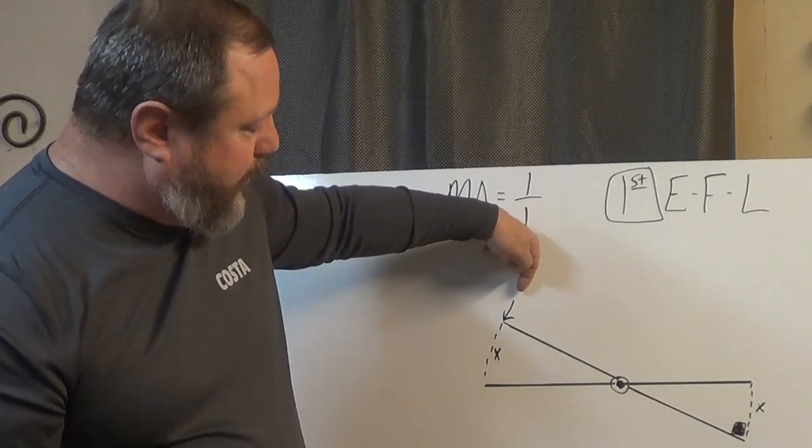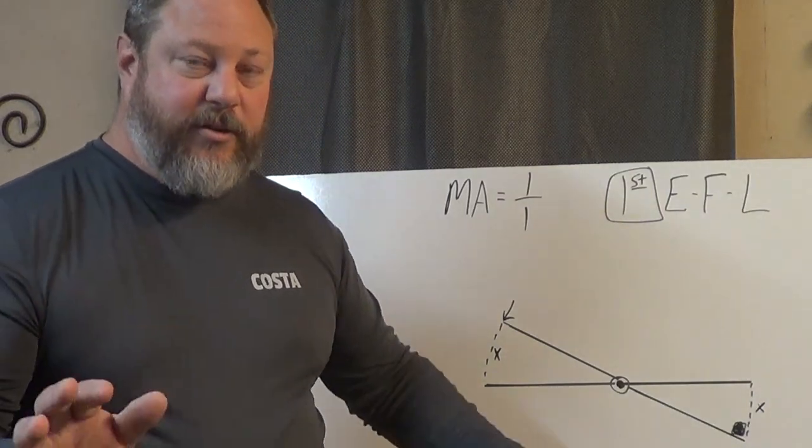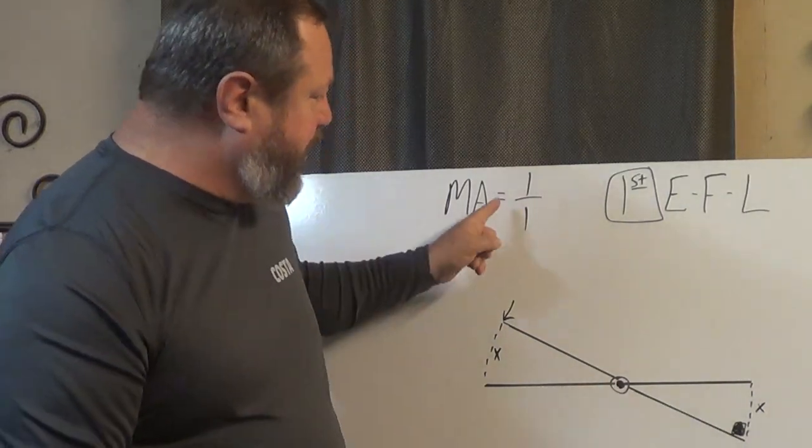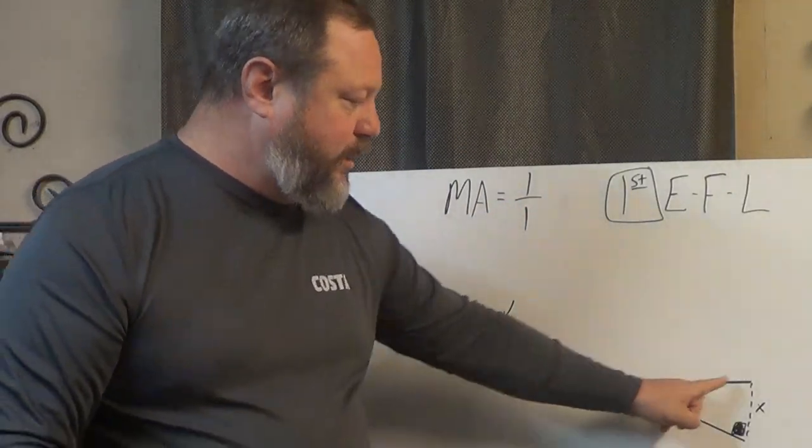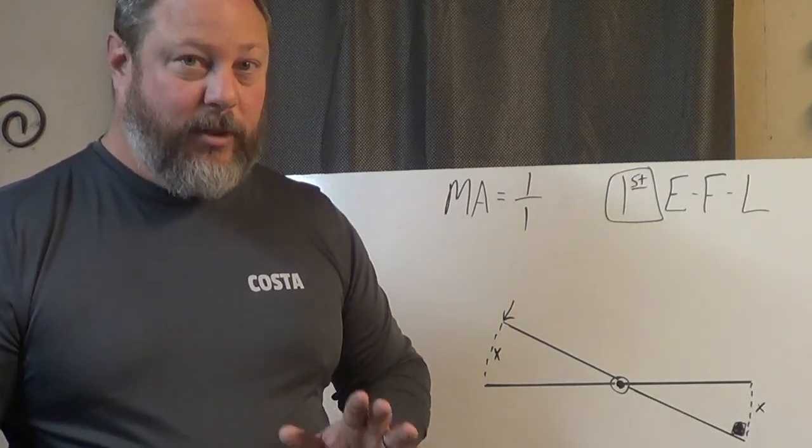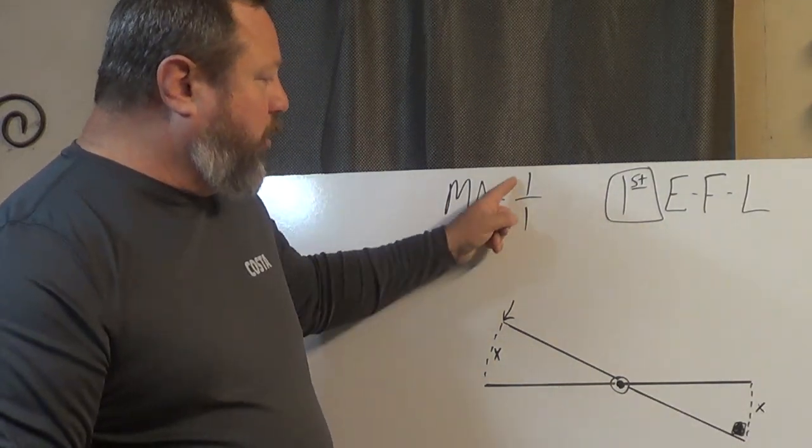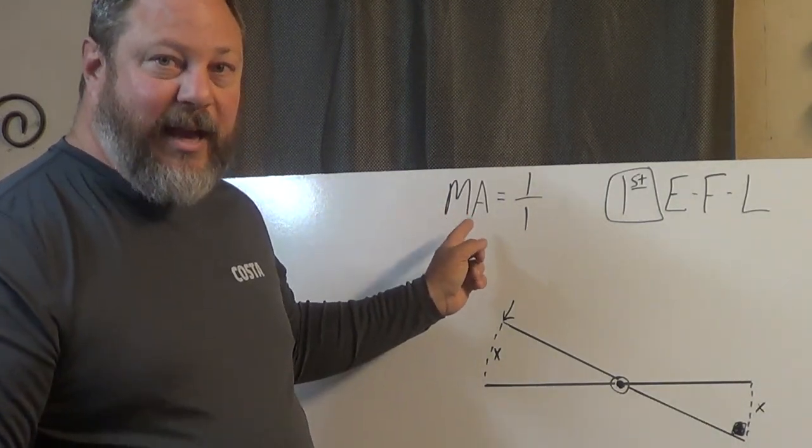Now here are the take-home parts for this. If that leverage ratio is one-to-one, so the length of the effort arm and the length of the load arm are the same length, then we have a one-to-one ratio which means we really have no mechanical advantage.